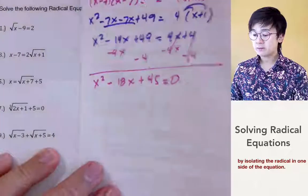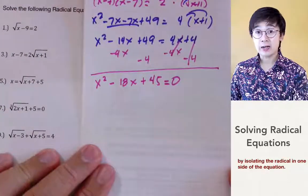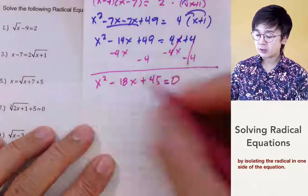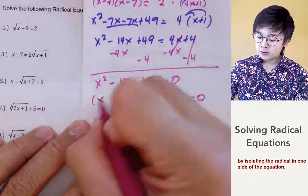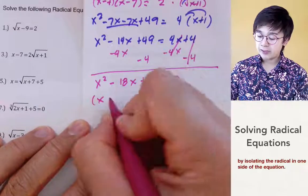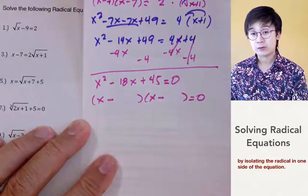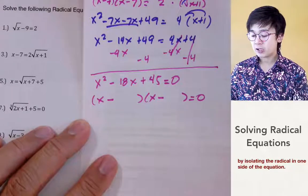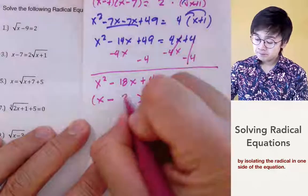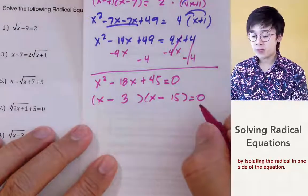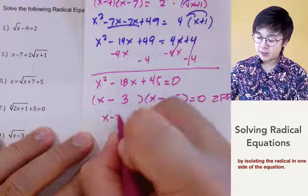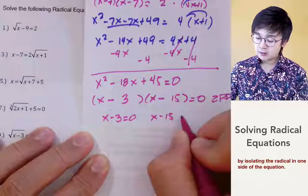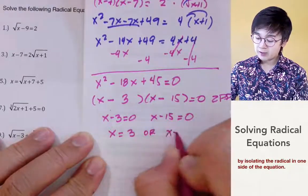Since we have a quadratic equation, we can either use the quadratic formula or factor it. This is a factorable quadratic equation, so we need factors of positive 45 that add up to negative 18. Both factors should be negative, and 3 and 15 work because 3 times 15 is 45 and negative 3 plus negative 15 is negative 18. Using the zero product property, x minus 3 equals 0 and x minus 15 equals 0, giving x equal to 3 or x equal to 15.